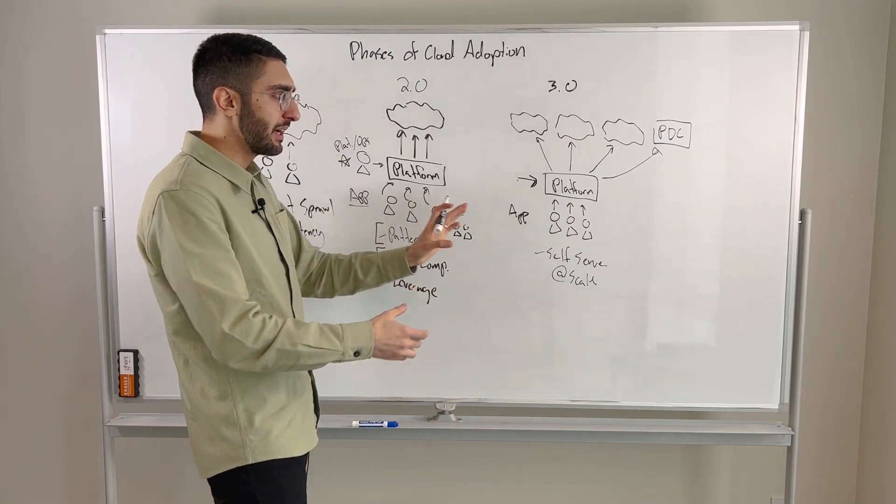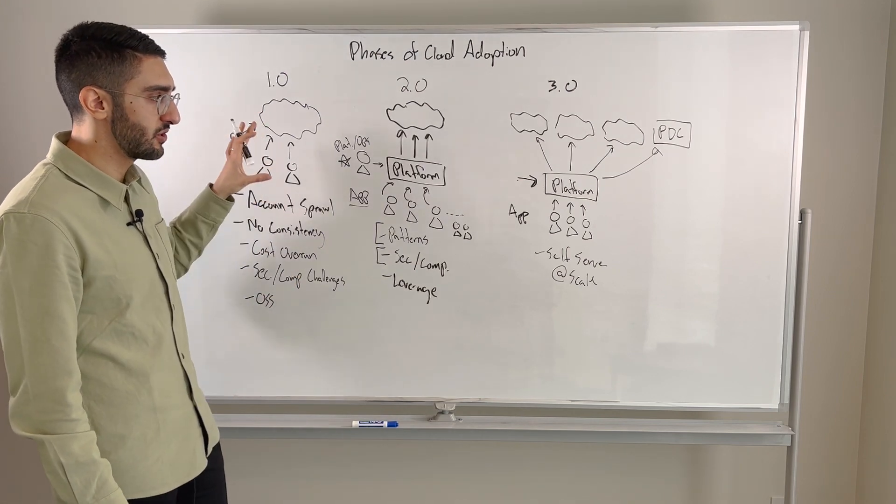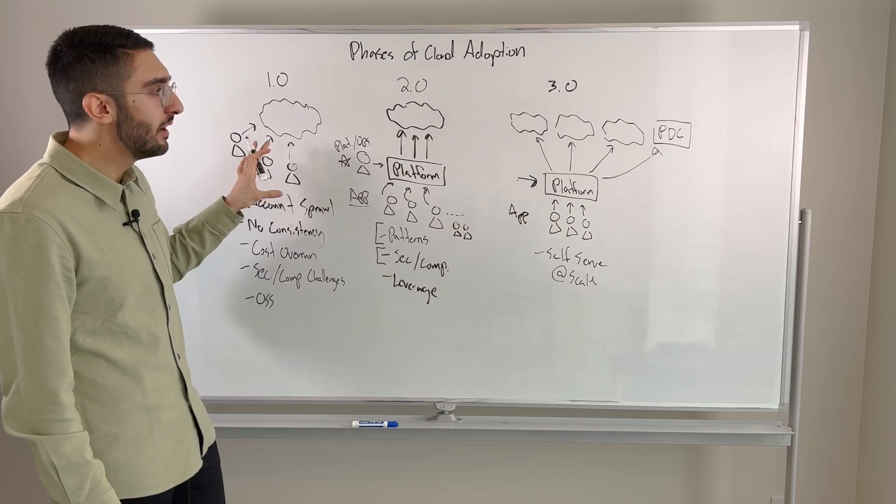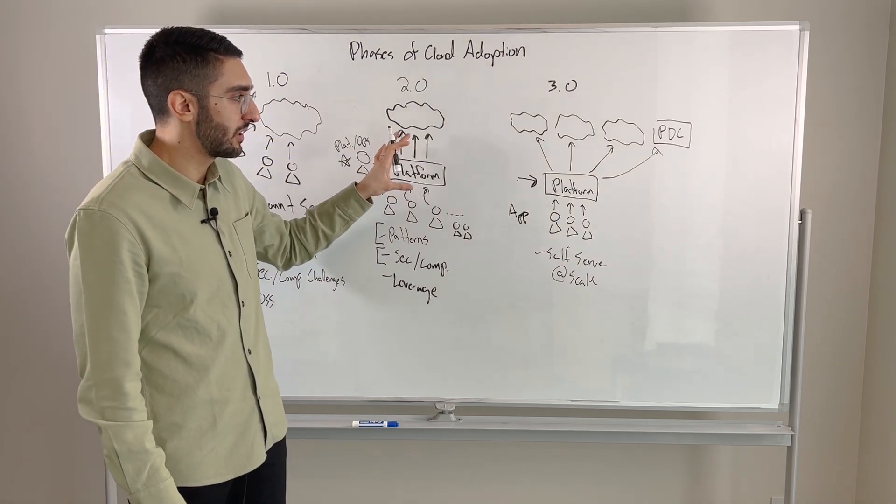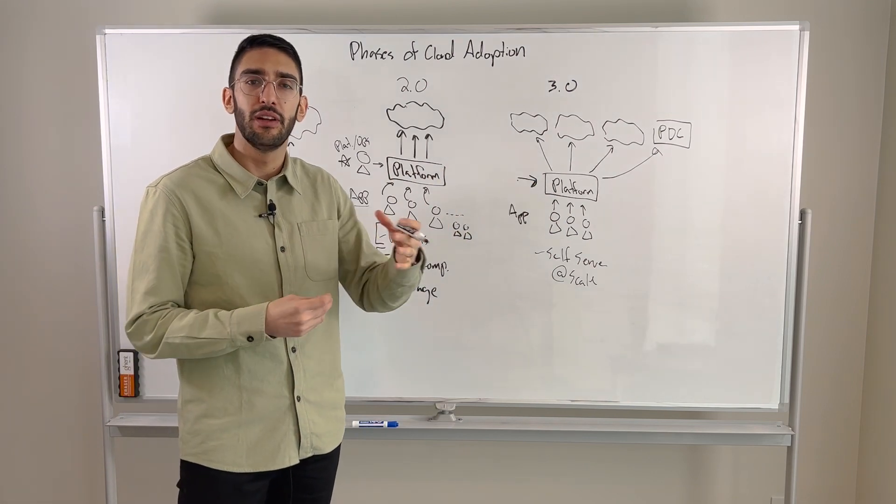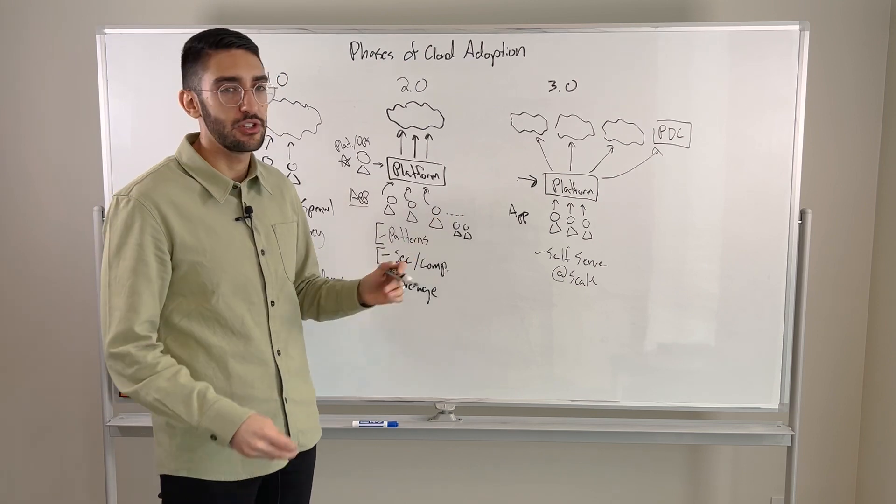So that really becomes the transition for us from a HashiCorp perspective, where we tend to start with organizations, they're using our open source in a tactical cloud in the 1.0, and as they move into a more mature intentional design around 2.0 and 3.0, that becomes a commercial conversation around how to use the enterprise version of the products to really enable their application teams at scale.